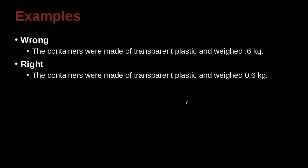The containers were made of transparent plastic and weighed 0.6 kilograms. Remember the rule here: should we have a zero before the decimal point? In this case, can the value be greater than one? Yes — something can weigh more than one kilogram. So the correct way to write this is 0.6.